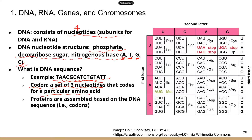For example, UCU codes for serine — a pretty common amino acid. UAU codes for tyrosine, and UGU codes for cysteine.